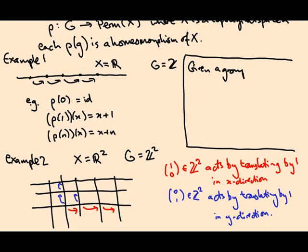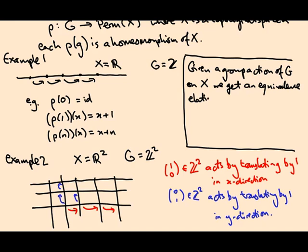So given the group action of the group G on space X, we get an equivalence relation that says two points are related or equivalent if and only if there exists some group element g such that g of x equals y.